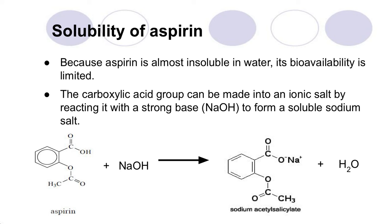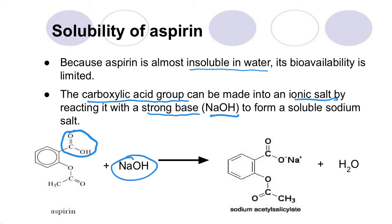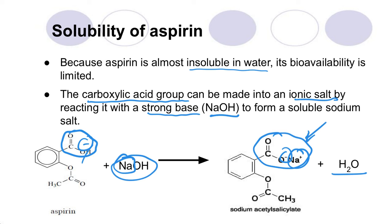Aspirin is pretty much completely insoluble in water, which means its bioavailability is going to be limited — in order for it to work and travel to pain sites within the body, it has to be soluble in the bloodstream to reach the site of injury. To make it more soluble, the carboxylic acid group can be converted into an ionic salt by reacting it with a strong base such as sodium hydroxide. The hydrogen comes off, leaving the oxygen with a negative charge that forms an ionic bond with the sodium ion, with water as the other product. This salt is way more soluble, making it way more effective as a medication.